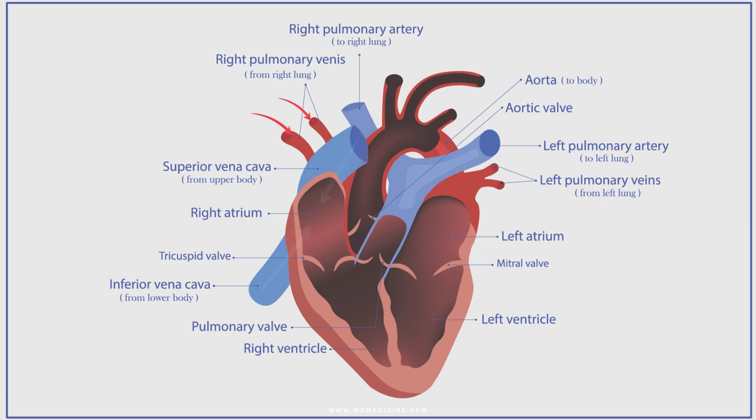The right atrium receives deoxygenated blood from the body. The left atrium collects oxygenated blood from the lungs. These two atria converge at the atrioventricular septum, a wall of tissue separating them.